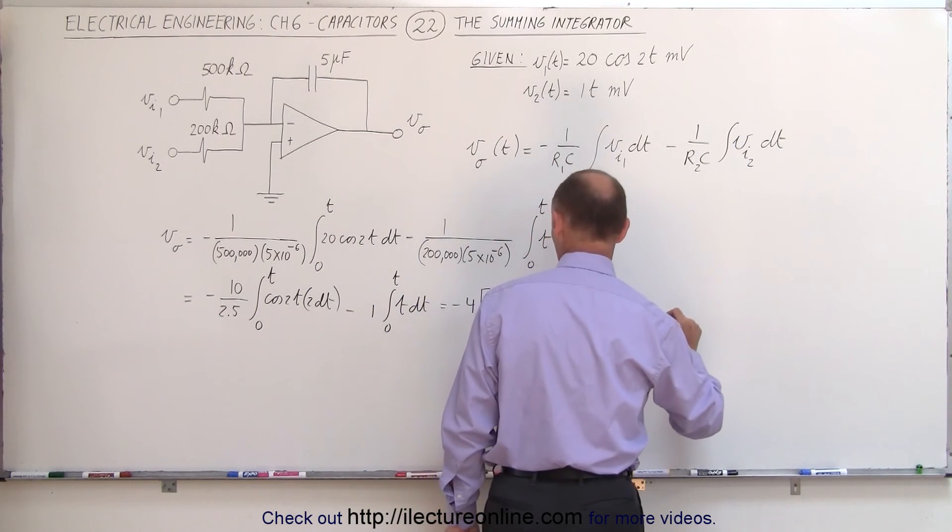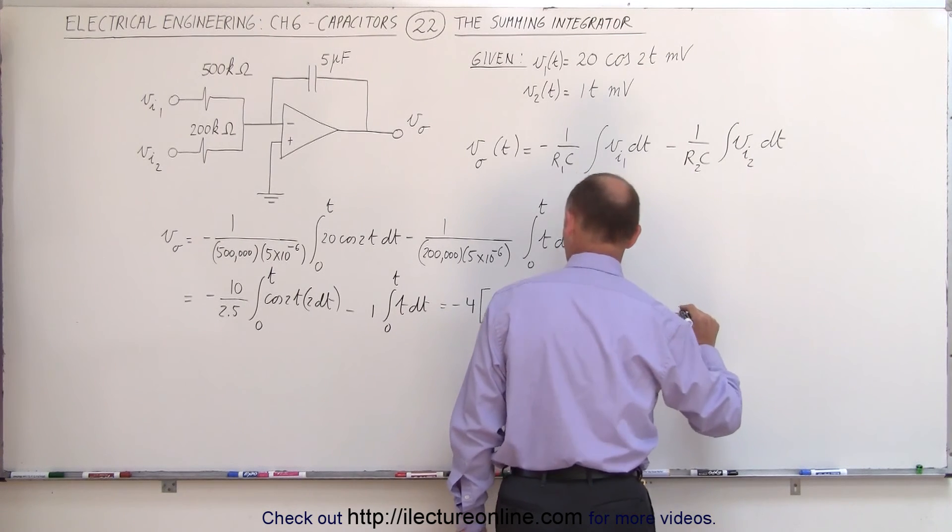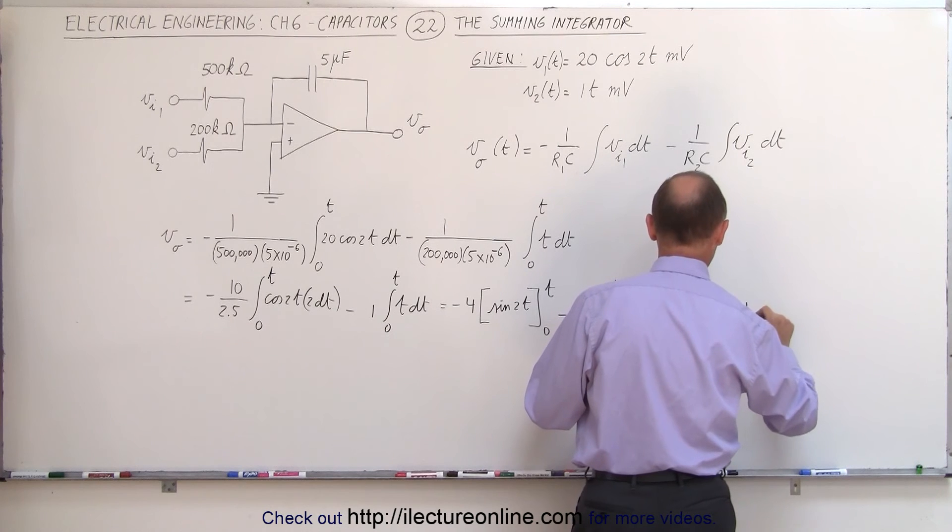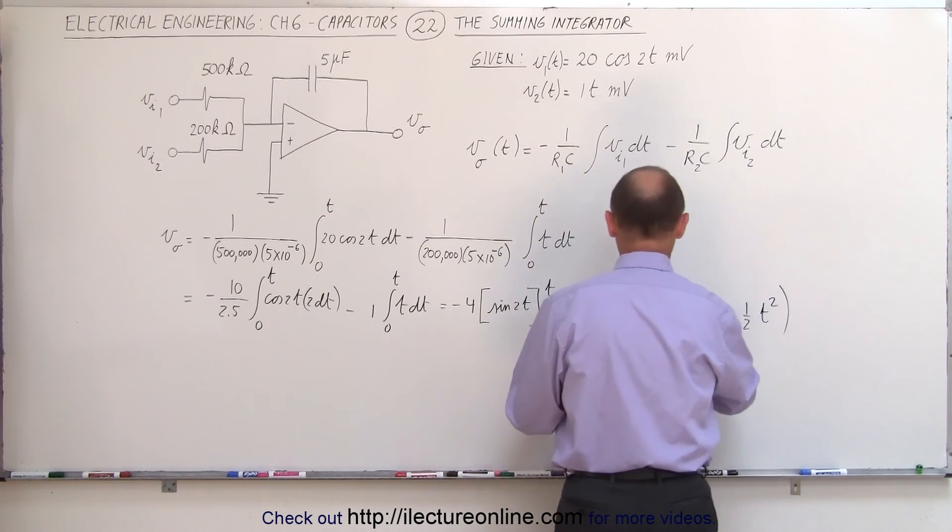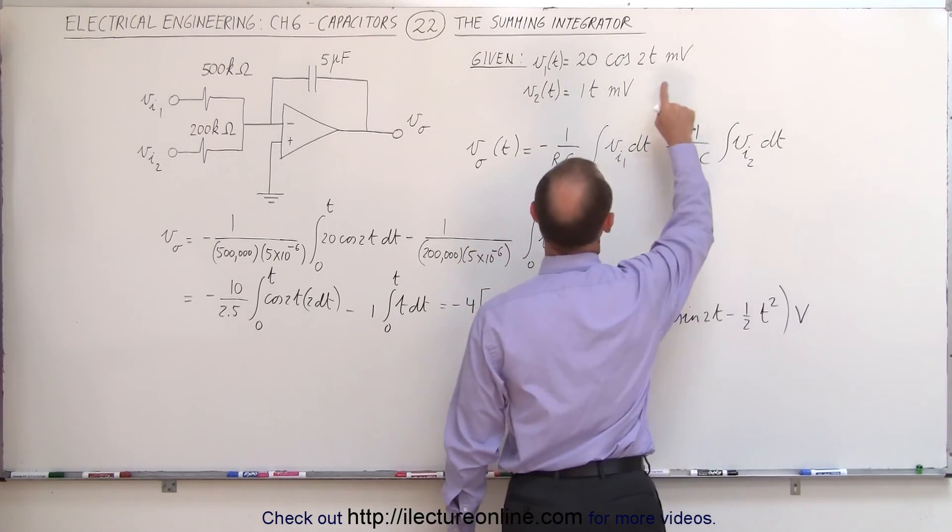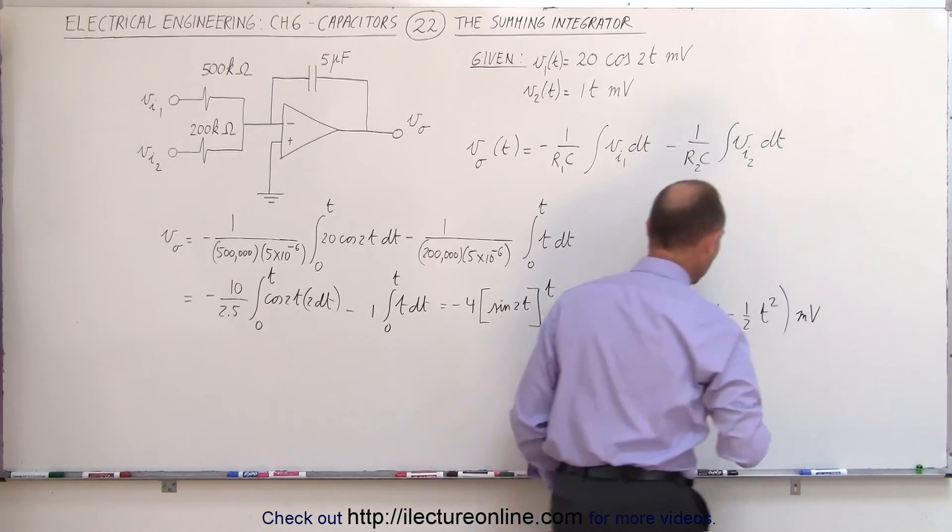So this is equal to minus 4 times the sine of 2t, minus 1 half times t squared, and of course, that would be in volts, because I think we have, oh, millivolts, because we're given the millivolts initially, so the answer would be in millivolts.